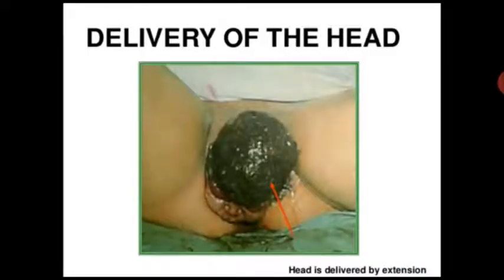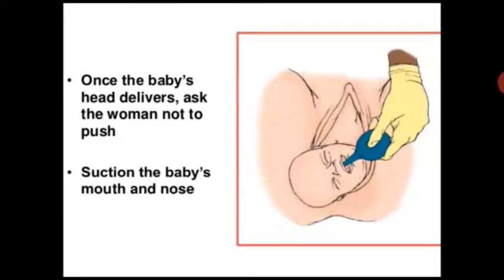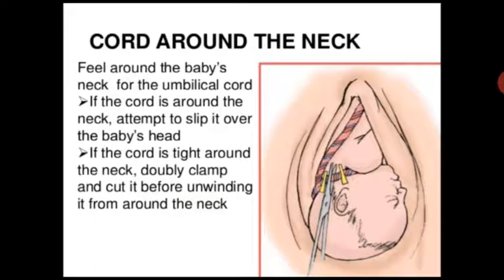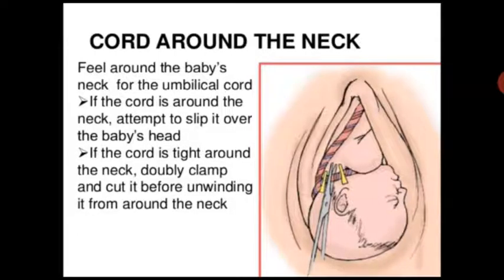Continue to gently support the perineum as the baby's head delivers. The head is delivered by extension. Once the baby's head is delivered, ask the woman not to push. Suction the baby's mouth and nose. Feel around the baby's neck for the umbilical cord. If the cord is around the neck, attempt to slip it over the baby's head. If the cord is tight around the neck, doubly clamp and cut it before unwinding it from around the neck.